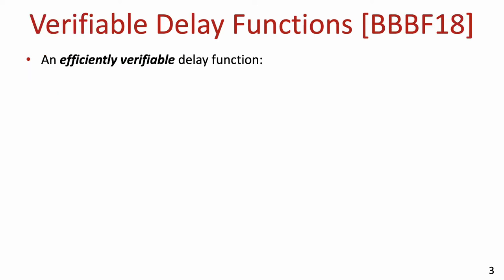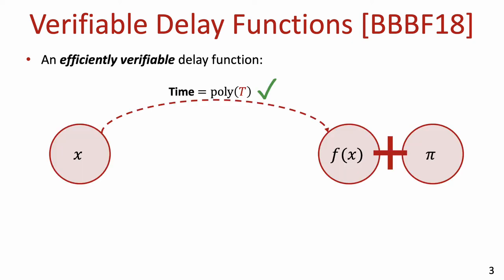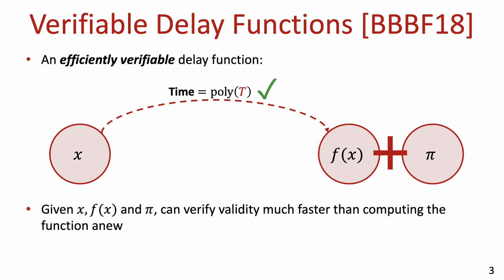A verifiable delay function, or a VDF for short, is a delay function which allows for fast verification. When computing the output f of the function on input x, it should be possible to produce alongside the output a short proof pi asserting the validity of this output. Then, given x, f of x, and pi, one can verify that f of x is indeed the output of the function on input x, and this verification should be much quicker than computing the function anew.